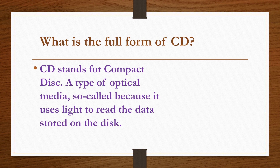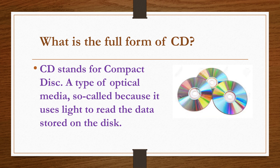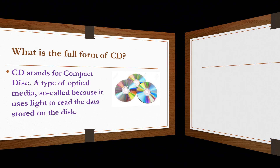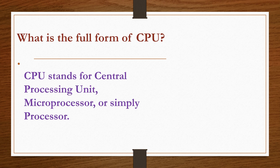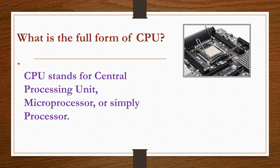What is the full form of CD? CD stands for Compact Disc, a type of optical media so called because it uses light to read the data stored on the disk. What is the full form of CPU? CPU stands for Central Processing Unit, microprocessor, or simply processor.